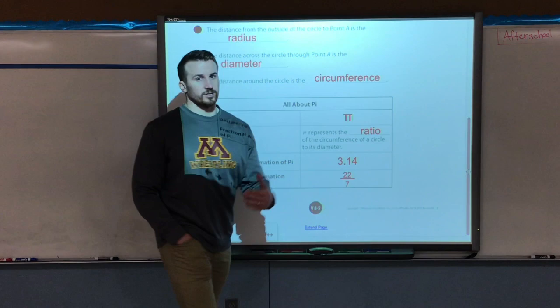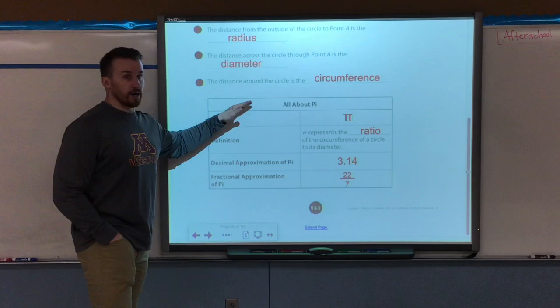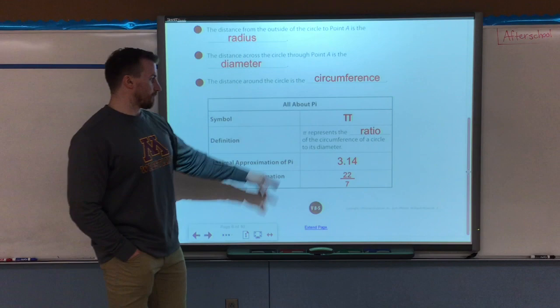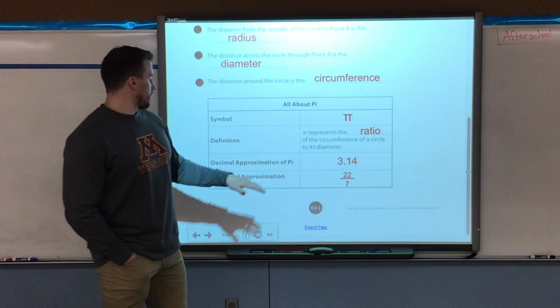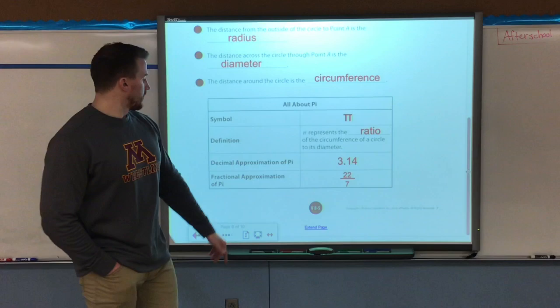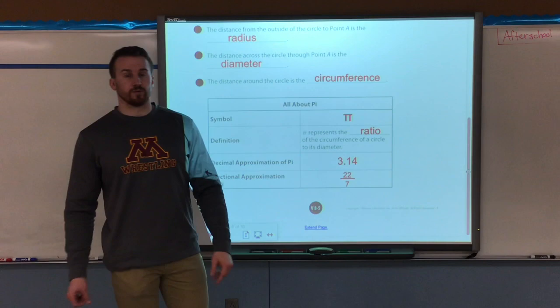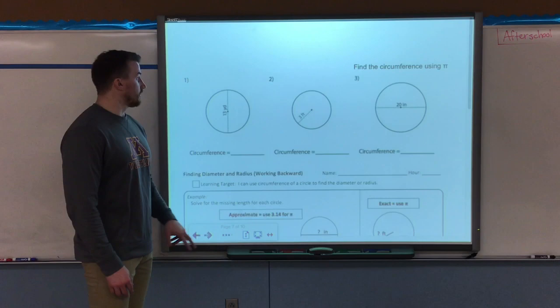Circumference deals with that fancy word pi. Remember the symbol looks like this. The definition is that pi represents the ratio of the circumference of the circle to its diameter. The approximation for pi is 3.14, that's what we're going to use a lot to solve these problems. The fraction of pi, closest fraction that we get to 3.14 is 22 sevenths. Quick review of all that stuff.